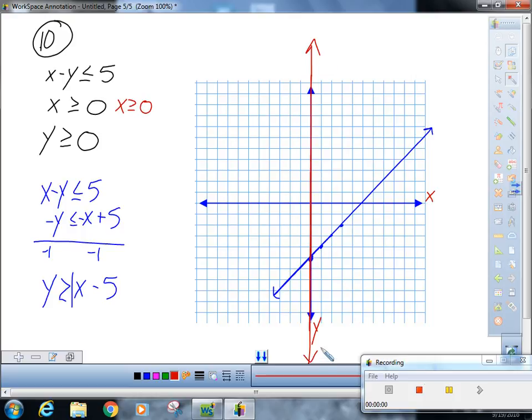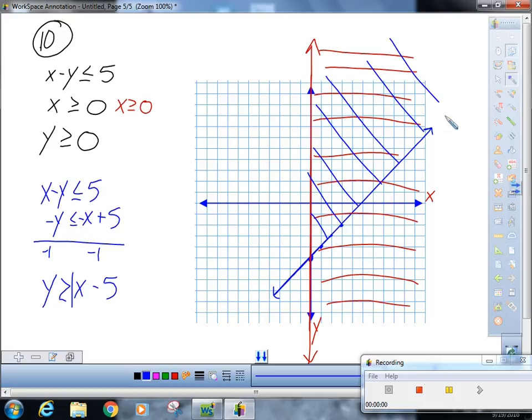We would have to shade to the right of that red line. Now let me go back to the blue one because I never shaded that one. We want Y is greater than or equal to this blue line, so now we know that's going to be in that section somewhere.